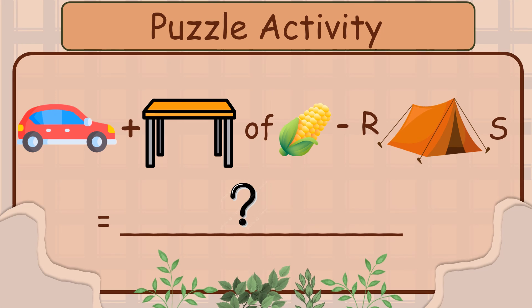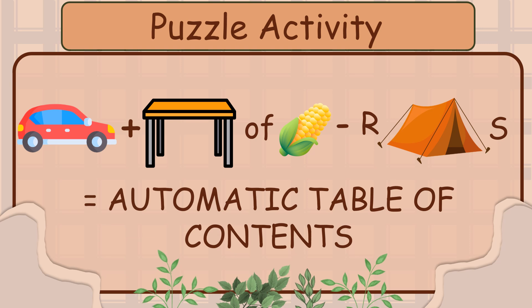Let's have a puzzle activity. Guess the words to form a phrase. This car is automatic, plus table, plus of, plus corn, minus R, plus tent, plus S. The answer is automatic table of contents.